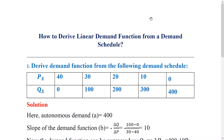If we examine a linear demand function, we have QX equals A minus BPX. Here A and B are the two parameters of the linear demand function. Looking at the demand schedule, we will find out the value of A and B.